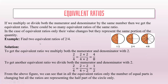For example, let us find two equivalent ratios of 2 upon 4. To get an equivalent ratio, we multiply both the numerator and the denominator by two: 2 upon 4 equals 2 multiplied by 2 divided by 4 multiplied by 2. From the above figure, we can see that in all equivalent ratios, only the number of equal parts is changing, but the ratios are representing the half part of the circle.